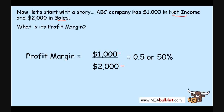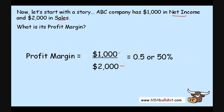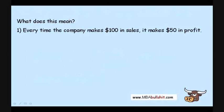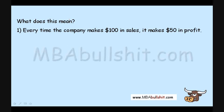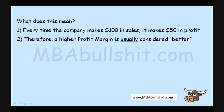Whether high or low is relative, depending on what you compare it against — whether you compare it against a similar company or against the historical profit margin of your own company. So what does a 50% profit margin mean? Simply, it means that every time the company makes $100 in sales, it makes on average a $50 profit. Therefore, a higher profit margin is usually considered better.